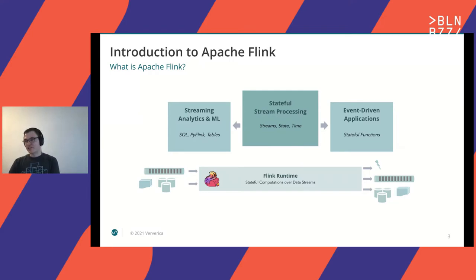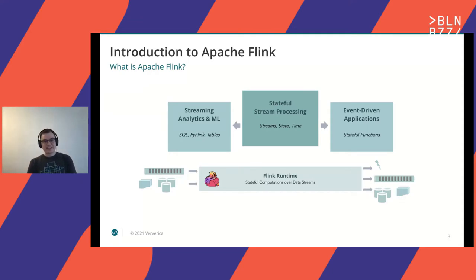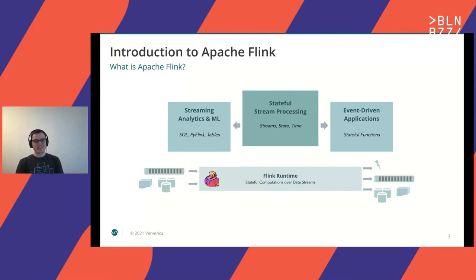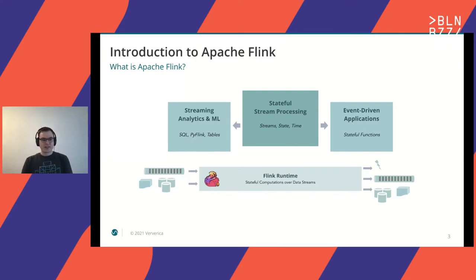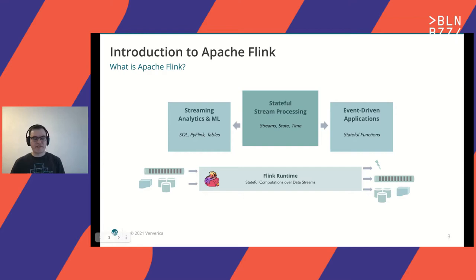A very brief introduction into Apache Flink. The website says it's stateful computations over data streams — a very abstract definition, maybe because the engine is very versatile and supports a lot of different use cases. The engine supports all kinds of data sources like databases, files, or message bus systems like Kafka, Kinesis, Google PubSub, and so on. It also supports writing to all these systems.